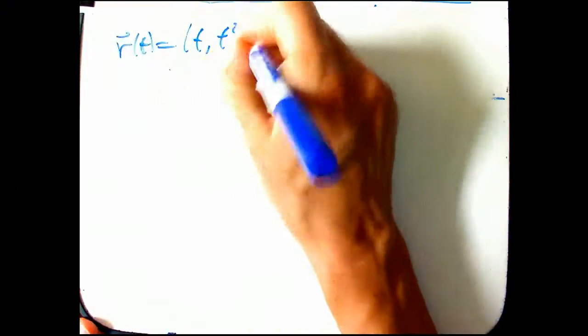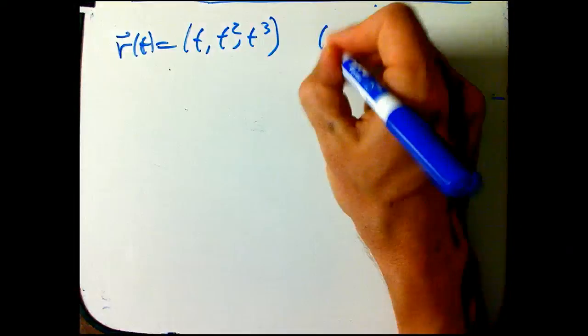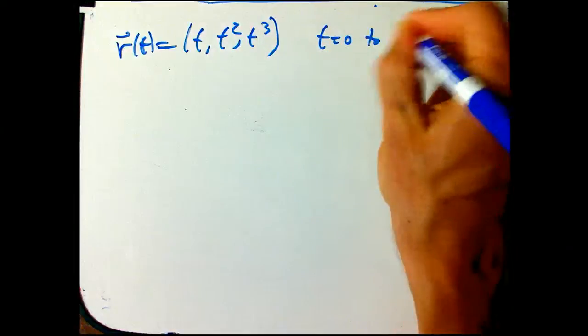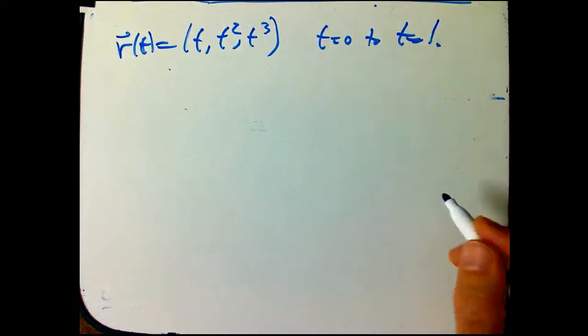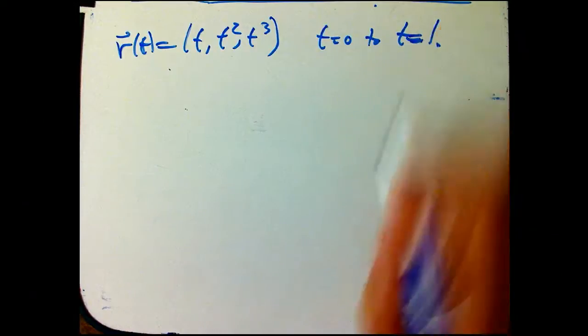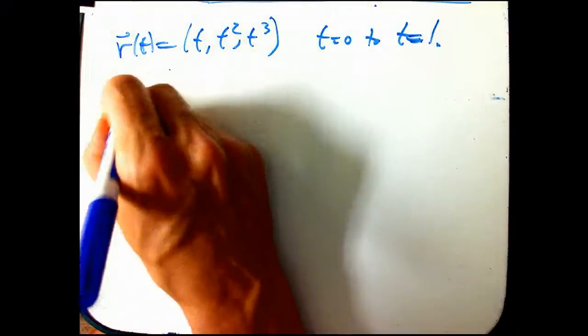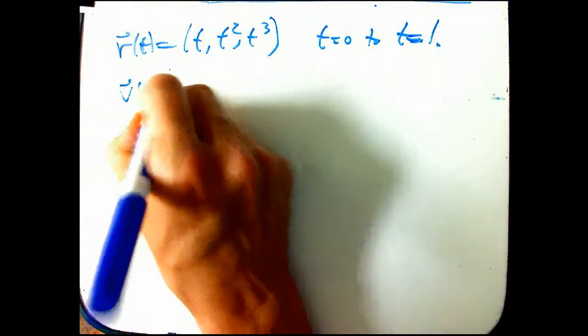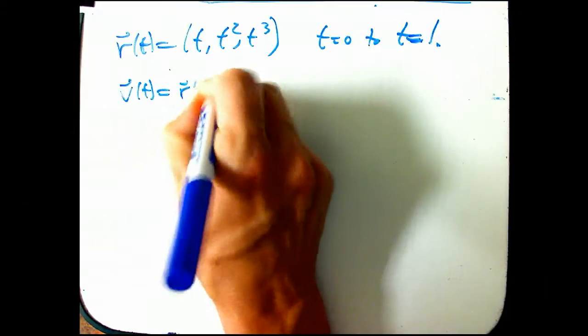One more example, and then we'll move to the second part of the video, a new video. So what about if I had something much less special and geometrically wonderful? r(t) is, let's say, t, t², t⁵. And t = 0 to t = 1. Still, not particularly complicated. I'm not trying to make it complicated. But we're going to see something interesting, even though I'm not trying to make it complicated.